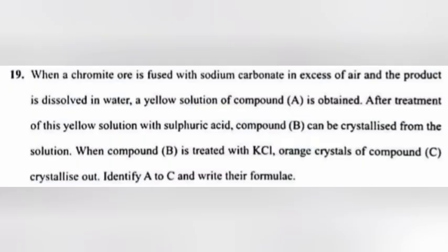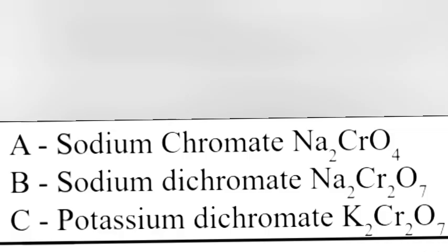Question 19: When a chromite ore is fused with sodium carbonate in excess of air and the product is dissolved in water, a yellow solution of compound A is obtained. After treatment of this yellow solution with sulfuric acid, compound B can be crystallized from the solution. When compound B is treated with KCl, orange crystals of compound C crystallize out. Identify A to C and write their formulas. Answer: A is sodium chromate, Na₂CrO₄.